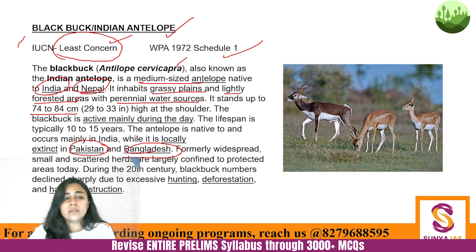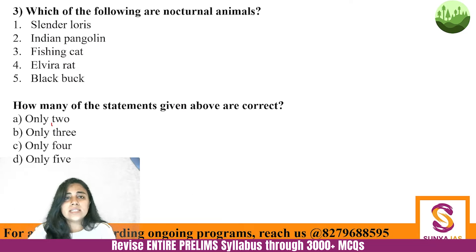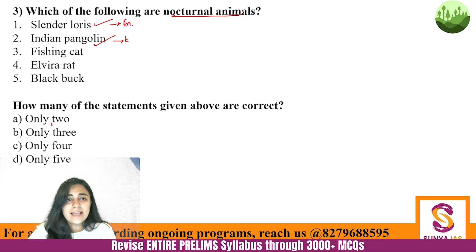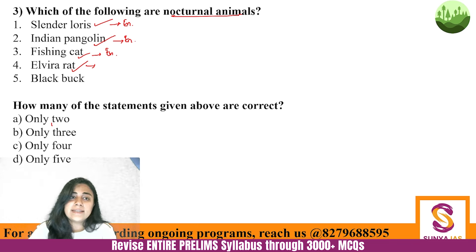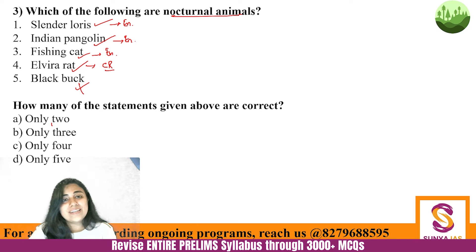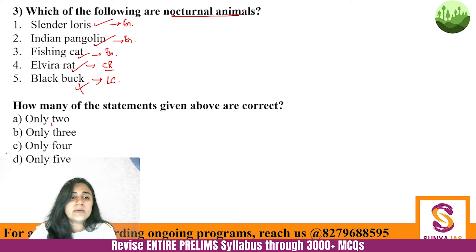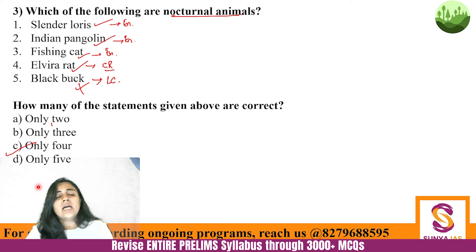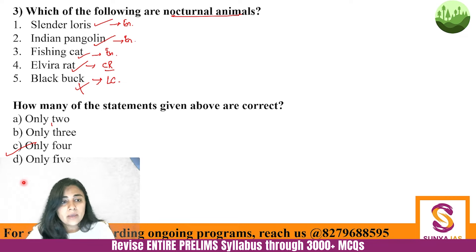Black Buck is not nocturnal — deer are not nocturnal as such. Coming back to the question: Slender Loris — yes, nocturnal, endangered; Indian Pangolin — yes, nocturnal, endangered; Fishing Cat — yes, nocturnal, endangered; Elvira Rat — yes, nocturnal, critically endangered; Black Buck — no, not nocturnal, least concern. So the answer is only the first four — option C. This is important because in 2023 a question came on which of the following is a nocturnal animal.